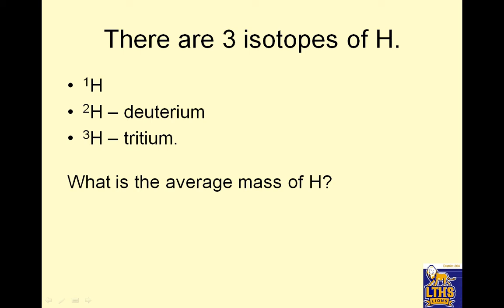There are three isotopes of hydrogen. Hydrogen 1, hydrogen 2, hydrogen 3. What is the average mass of hydrogen? It is not 2, because 99% of hydrogen is hydrogen 1, and like 0.7% is hydrogen 2, and 0.3% is hydrogen 3. I made up those numbers, but the idea works. So the average is really close to 1, because almost all of them are hydrogen 1.